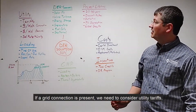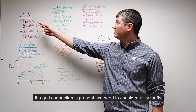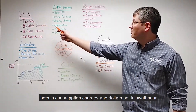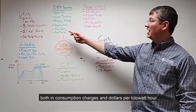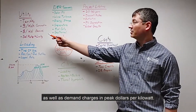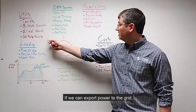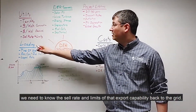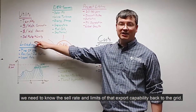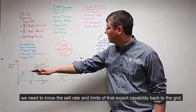If a grid connection is present, we need to consider utility tariffs — both consumption charges in dollars per kilowatt-hour as well as demand charges in peak dollars per kilowatt. If we can export power to the grid, we need to know the sell rate and limits of that export capability back to the grid.